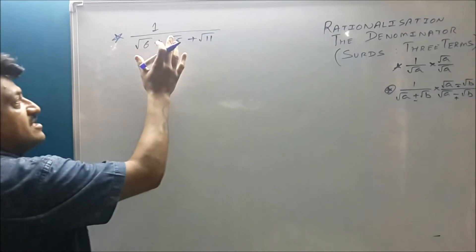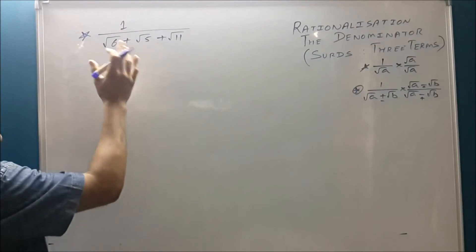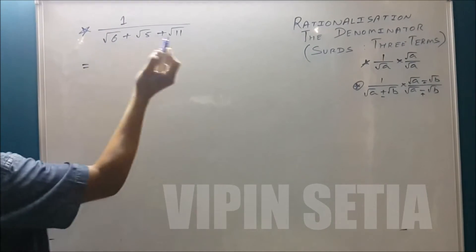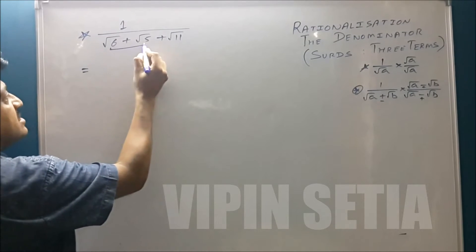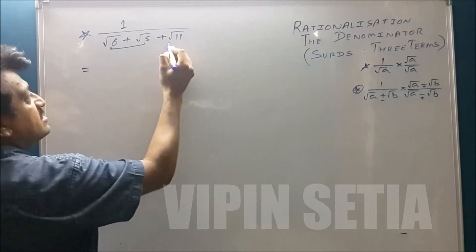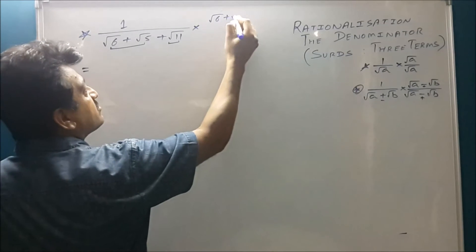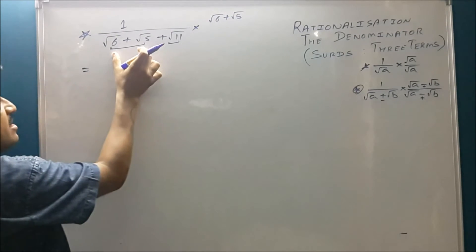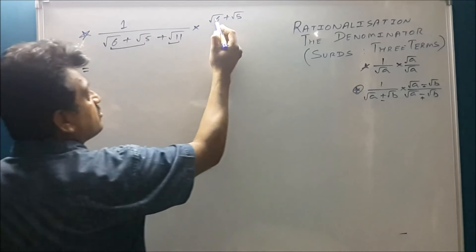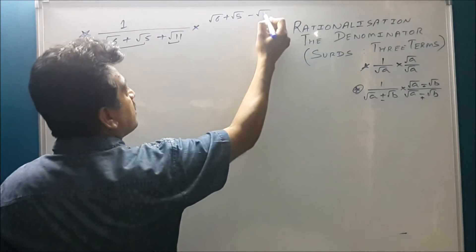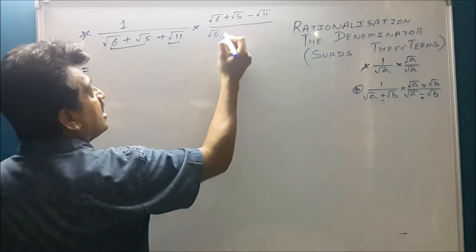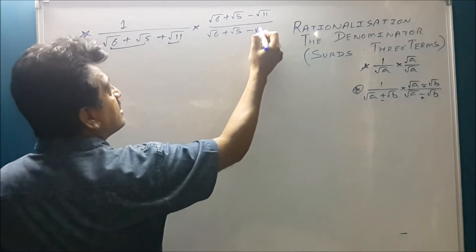Now we have to do rationalizing the denominator of surds with three terms. What I advise you, take this as first term and this as second term. So you multiply root 6 plus root 5. This is your A plus B. So this is your A minus B and again it is A minus B.